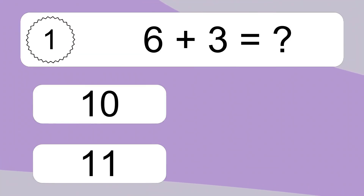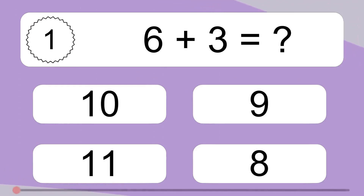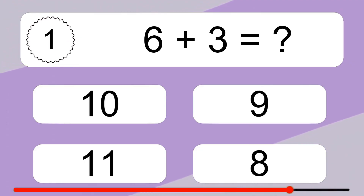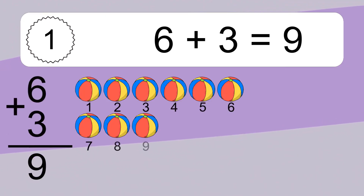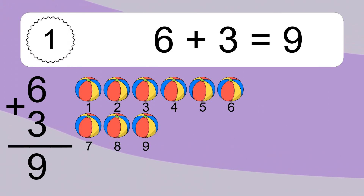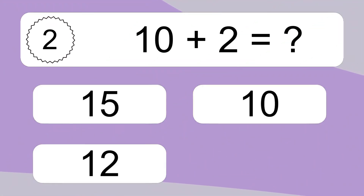6 plus 3 equals what? 6 plus 3 equals 9. Let's count it! 1, 2, 3, 4, 5, 6, 7, 8, 9.